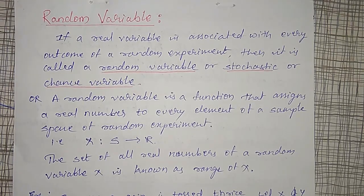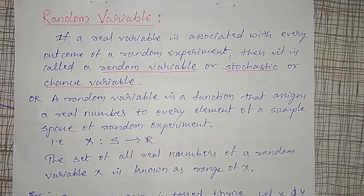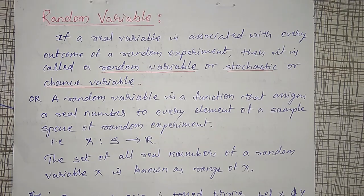Hello friends. In this video I am going to explain what is a random variable. In random variables there are two types: discrete random variable and continuous random variable. With examples I am going to explain them, differentiate them, and then probability distribution we will discuss one by one.